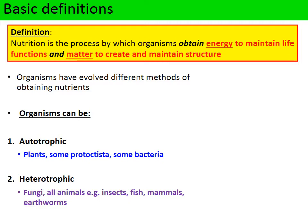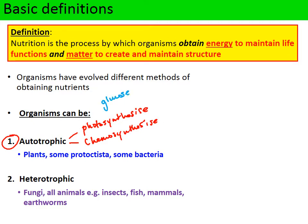There are two forms of nutrition: autotrophs and heterotrophs. Autotrophs include two types of organisms — plants that can photosynthesize, and some bacteria that can chemosynthize. Photosynthesis is where light energy is converted to chemical energy in the form of glucose, and chemosynthesis is where energy released from inorganic reactions is used to build more complex organic molecules such as glucose. These two processes build complex organic molecules, so these organisms essentially make their own food.